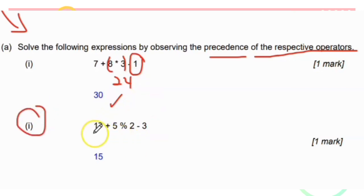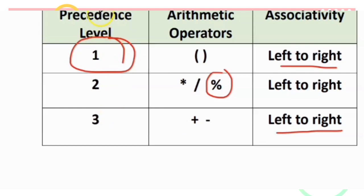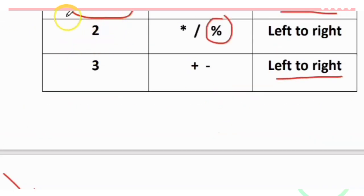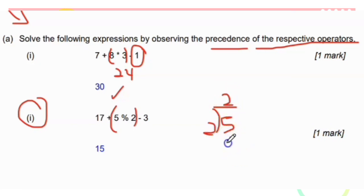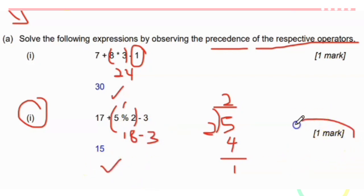Second question: 17 + 5 % 2 - 3. Remember the level of precedence — no brackets, so go to the second level: modulus first. 5 % 2 = 1 (keep the remainder). Then left to right: 17 + 1 = 18, then 18 - 3 = 15. The answer is 15.